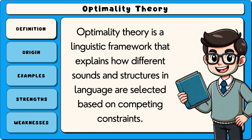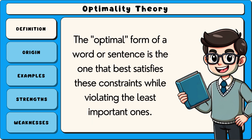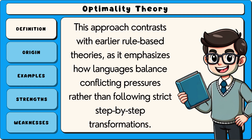Optimality theory is a linguistic framework that explains how different sounds and structures in language are selected based on competing constraints. Instead of following fixed grammatical rules, languages operate by ranking constraints, which are rules that either encourage or prohibit certain linguistic patterns. The optimal form of a word or sentence is the one that best satisfies these constraints while violating the least important ones. This approach contrasts with earlier rule-based theories, as it emphasises how languages balance conflicting pressures rather than following strict step-by-step transformations.